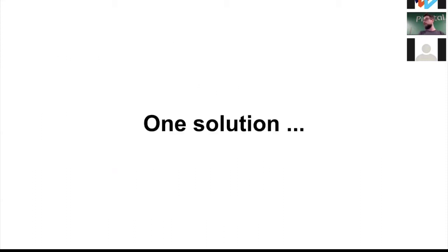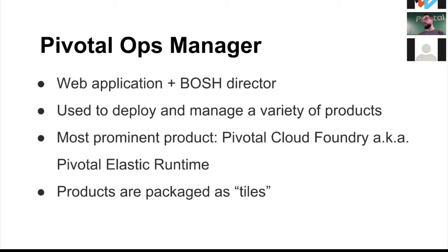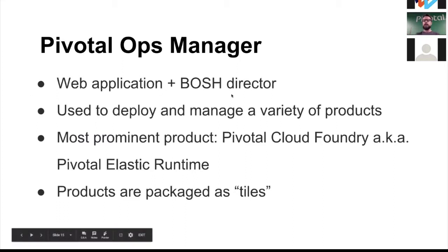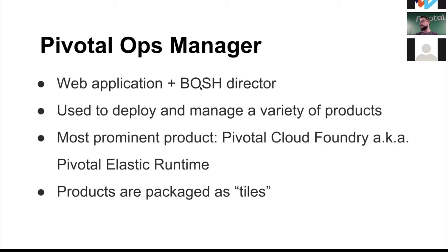This is not a new problem and there are solutions out there. For example, you could choose not to operate this at all and use a hosted Cloud Foundry like Pivotal Web Services or IBM Bluemix. But if you wanted to operate it yourself, you could go with Pivotal Ops Manager — think of it like an AMI or virtual machine image that bundles two things: a Ruby on Rails web application and a BOSH director.